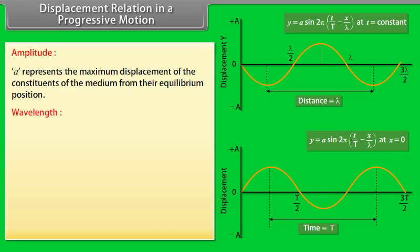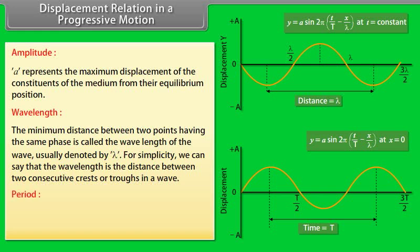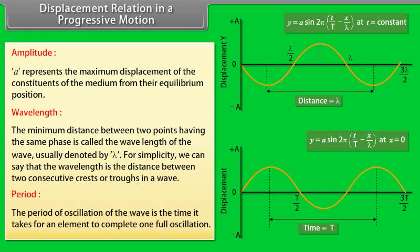Wavelength: The minimum distance between two points having the same phase is called the wavelength of the wave, usually denoted by lambda (λ). For simplicity, the wavelength is the distance between two consecutive crests or troughs in a wave. Period: The period of oscillation of the wave is the time it takes for an element to complete one full oscillation.